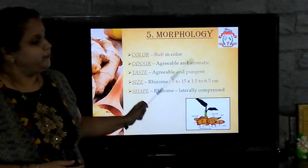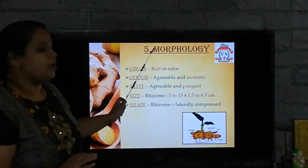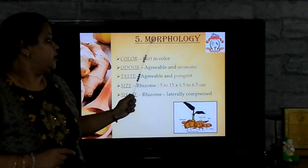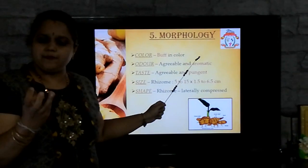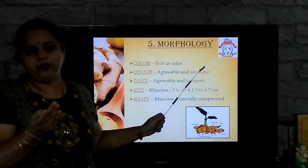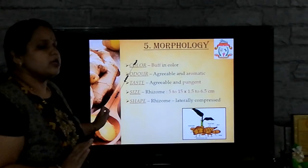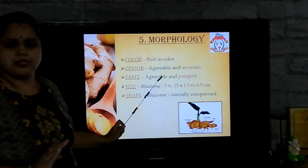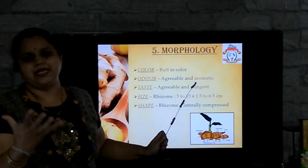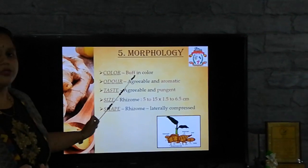Now we will discuss about the morphology of ginger, which is the most important parameter. Morphological evaluation is also called macroscopic evaluation. It is also called sensory evaluation or organoleptic evaluation because these evaluations are done using your senses. We study it as colour, odour, taste, shape, size and extra features. Coming to the colour of ginger, it is buff in colour.